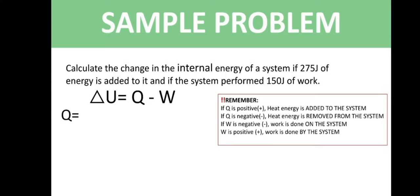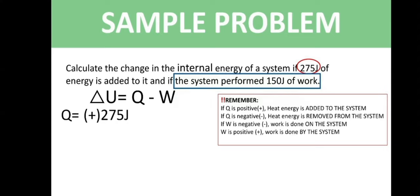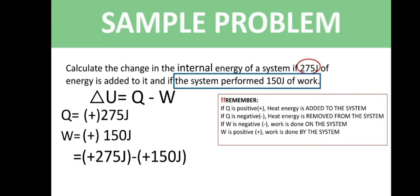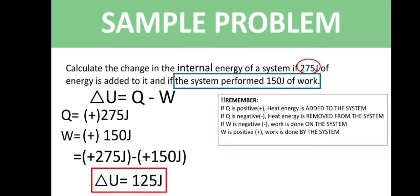Q is associated with heat energy, which is 275 joules. Since 275 joules of heat energy is added to the system, Q is positive 275 joules. The system performed 150 joules of work, meaning work is done by the system, so W is positive 150 joules. We can now calculate: delta U equals positive 275 joules minus positive 150 joules, which equals 125 joules. The internal energy is equal to 125 joules.